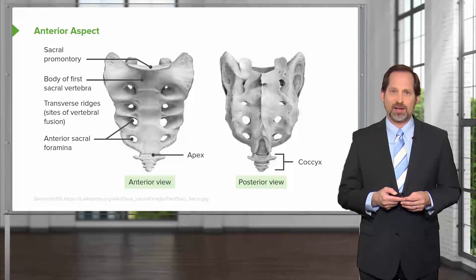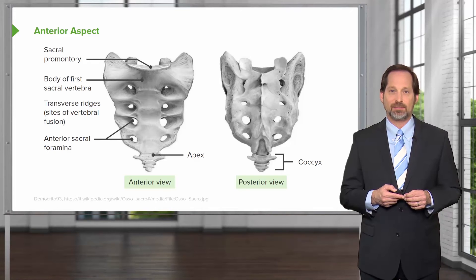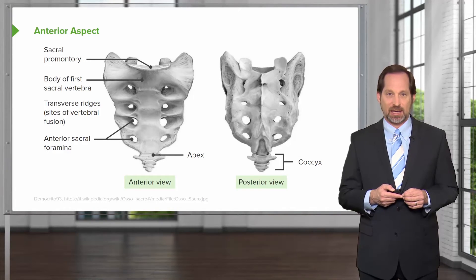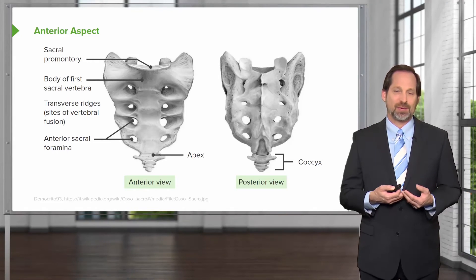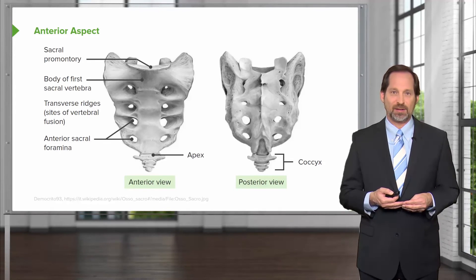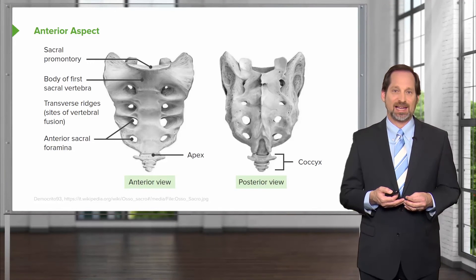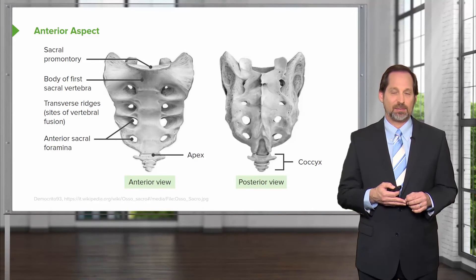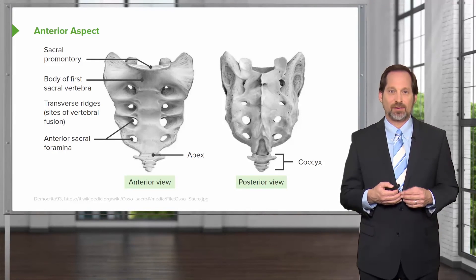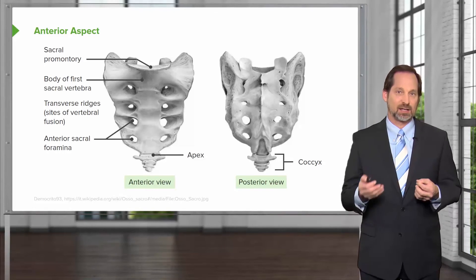Here you can see the sacral promontory where L5 attaches, and at the bottom where the sacrum connects to the coccyx. The sacrum is typically fused by 18 years of age in men and 21 years of age in women. It's normally four to six sacral vertebrae that fuse to form one sacral bone, which then attaches to the coccyx, which has three to five segments. Once solidified by 30 to 40 years of age, motion occurs only where the sacrum connects to other bones.